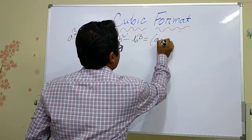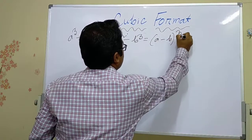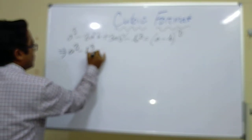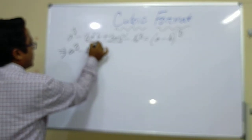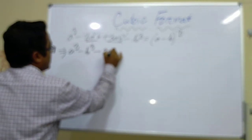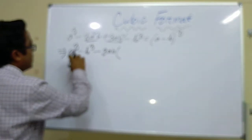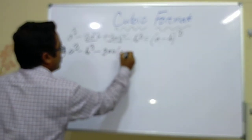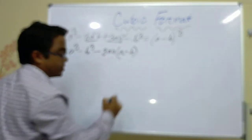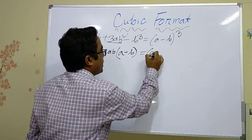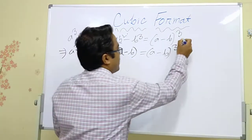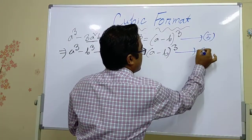This is the formula for (a − b) whole cube. Same way, this can also be written as a cube minus b cube. If we take 3ab common from the middle two terms, the remaining terms here have signs changed — plus becomes minus. Equal to (a − b) whole cube. This is equation number 5. And this is equation number 6.